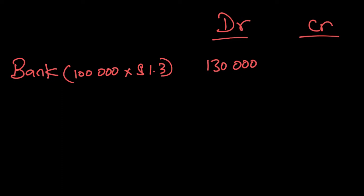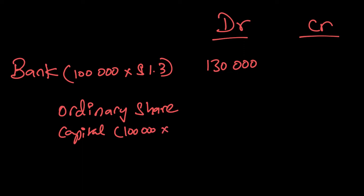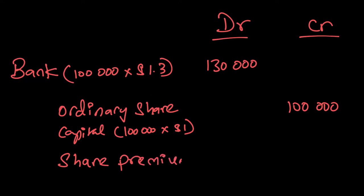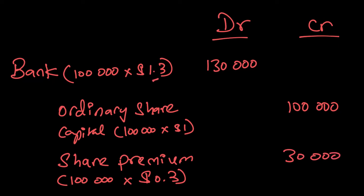Now how do I record this in my equity section? First, I'll record the original par value. The number of shares issued goes to my ordinary share capital account — 100,000 shares at $1 each, so $100,000 should be credited to ordinary share capital. I'll separately record the premium: I'll credit my share premium account. On 100,000 shares I've made a gain of $0.30, so that's a gain of $30,000.